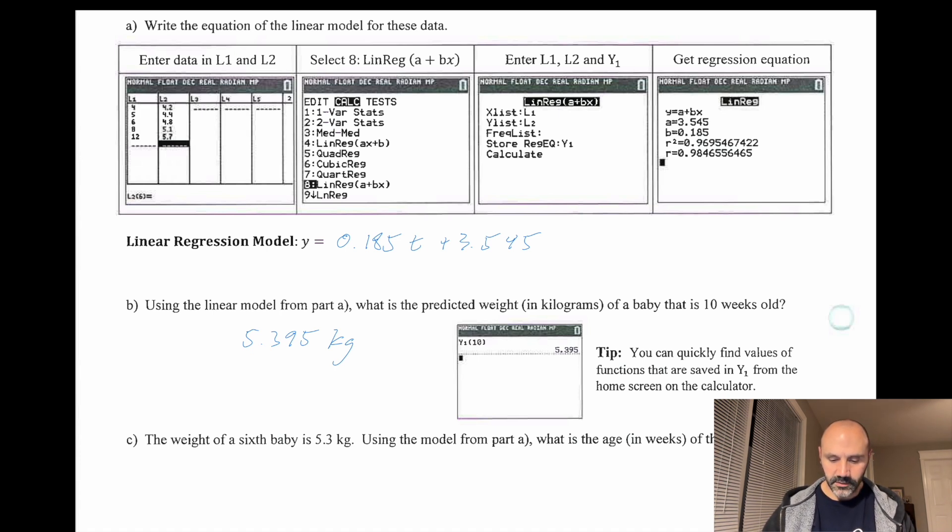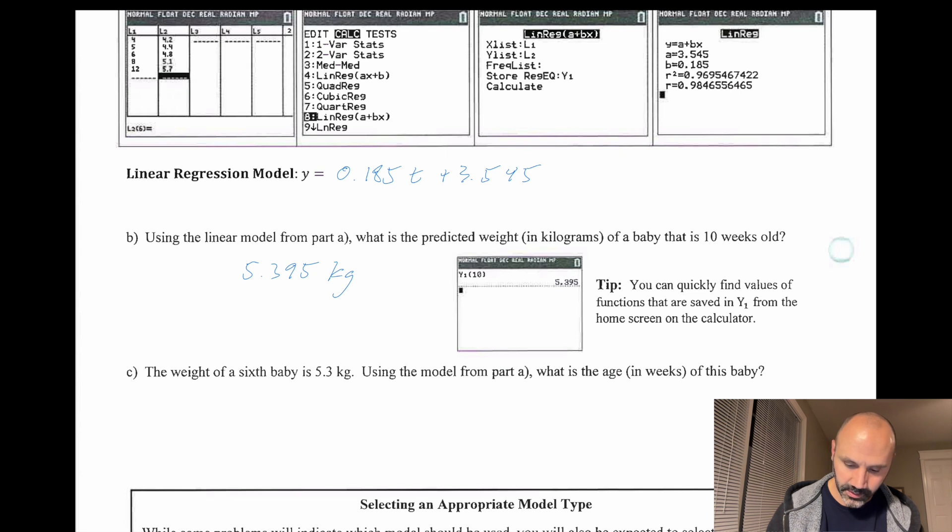And then it says if the weight of a sixth baby is 5.3 kilograms, use the model from part A to find what is the age in weeks of this baby. Using the regression model, what would we find? So all you're doing here is you're writing the function and you're putting in 5.3 as the weight. So 5.3 equals 0.185t plus 3.545. When you solve this, you end up with t equals 9.486. And the units here are in weeks.